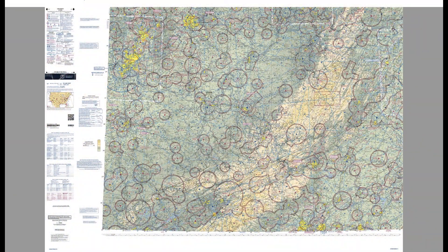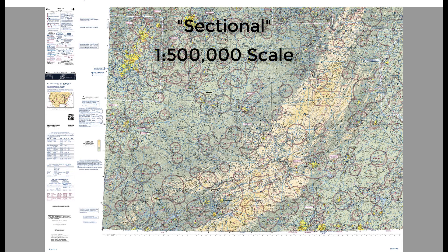First, let's start with what a VFR sectional chart is. VFR sectional charts, normally abbreviated to just sectional, are a type of map released by the Federal Aviation Administration, or FAA. These are used for navigation during flight under Visual Flight Rules, or VFR. They are 1:500,000 scale maps which are named after a city in their coverage area and contain information useful for pilots such as airport locations.